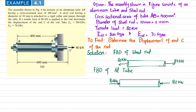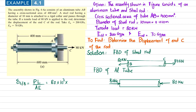Now we will first determine the displacement of end C with respect to B by finding the elongation in the steel rod. Designating the endpoints as B and C, the displacement of C with respect to B equals PL divided by AE. Here P is 80 kilonewtons, so 80 × 10³ N, multiplied by the length of the steel rod CB which is 600 mm, that is 600 × 10⁻³ m, divided by the area — pi over 4 times (0.01)² square meters.